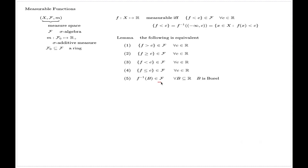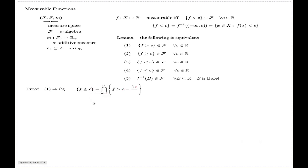All five statements are equivalent and all will be used when working with measurable functions. We will prove the lemma by a series of circular implications. First we look at implication 1 implies 2. This follows immediately from the identity that {x : f(x) ≥ C} equals the countable intersection of sets of the form {x : f(x) > C − 1/n}. I will use this identity now.